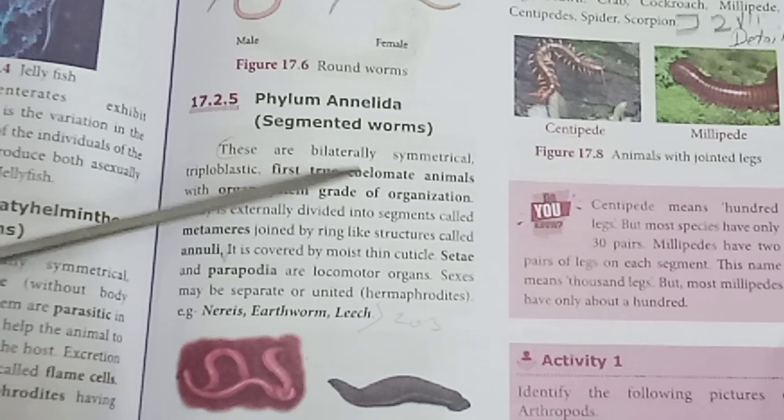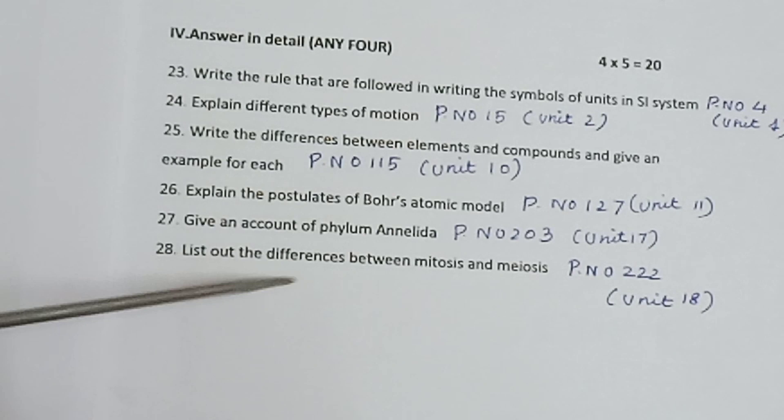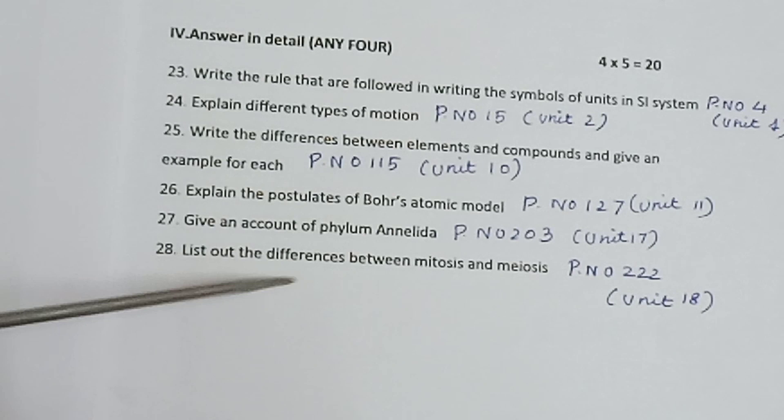Question 27: Give an account of phylum Annelida. Examples are earthworm and leech. Question 28: List out the differences between mitosis and meiosis. Page number 222, Unit 18. Mitosis and meiosis in tabulation format. Very important.